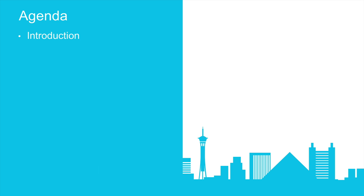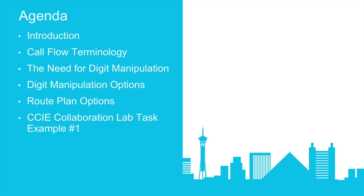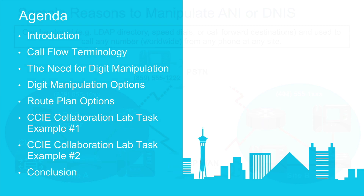Here's the agenda of that session. We'll do a brief introduction and make sure that everybody's on the same page when it comes to call flow terminology. We'll discuss the need for digit manipulation — that's one of the big focuses. We want to manipulate the caller ID and the number that was dialed. We'll take a look at options for setting up a route plan, covering both the traditional approach and the approach I'm going to recommend for your CCIE lab as well as production networks. And we'll even go through a couple of sample lab tasks. Then we'll wrap things up with a conclusion.